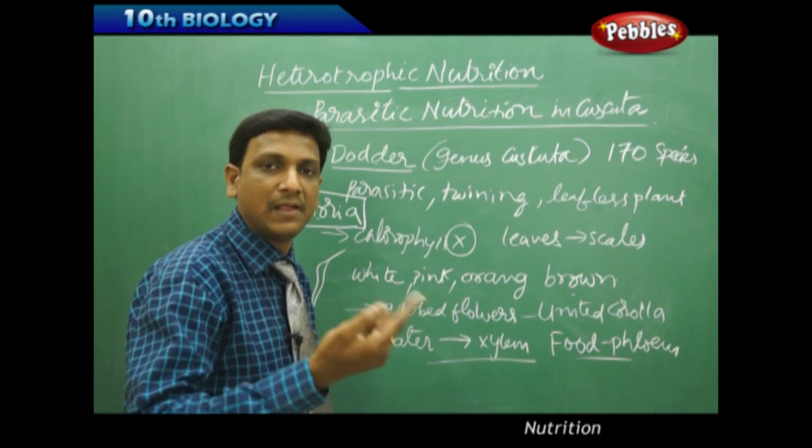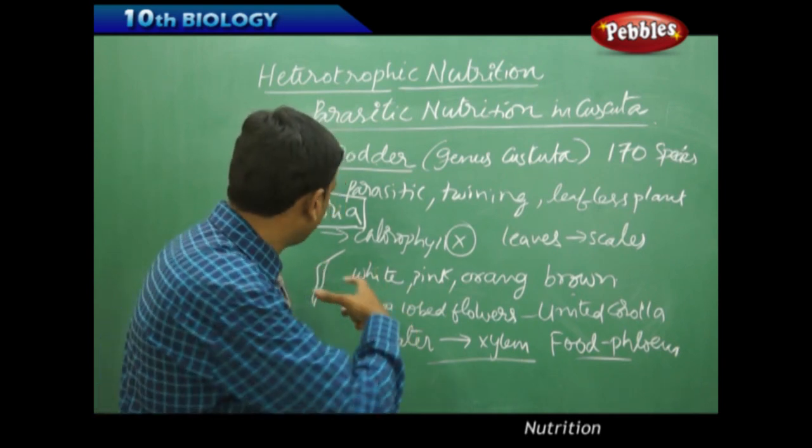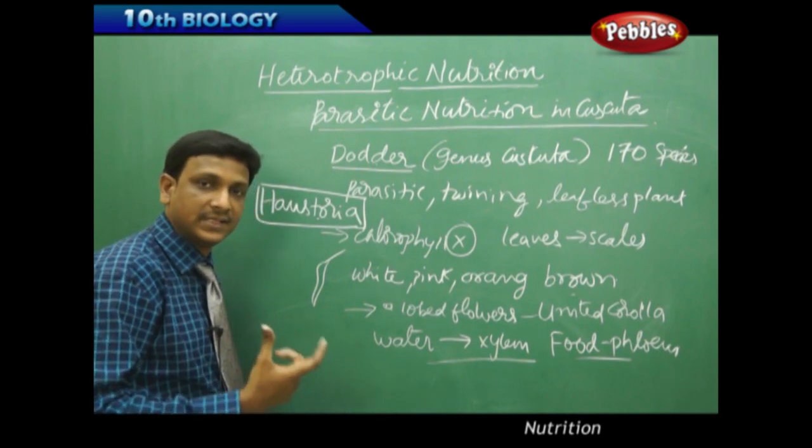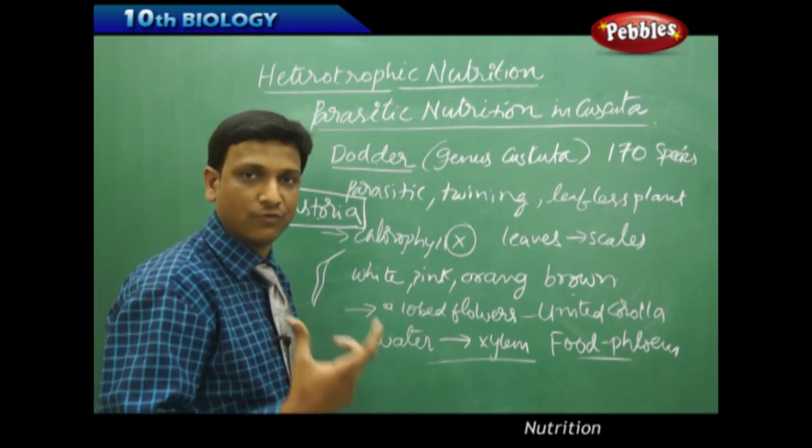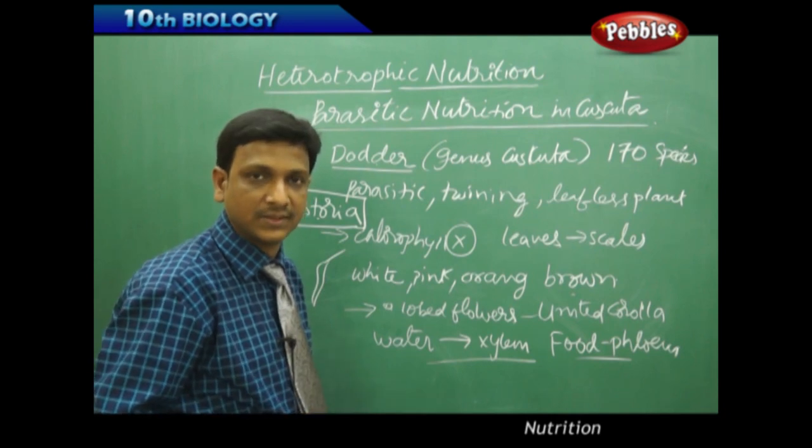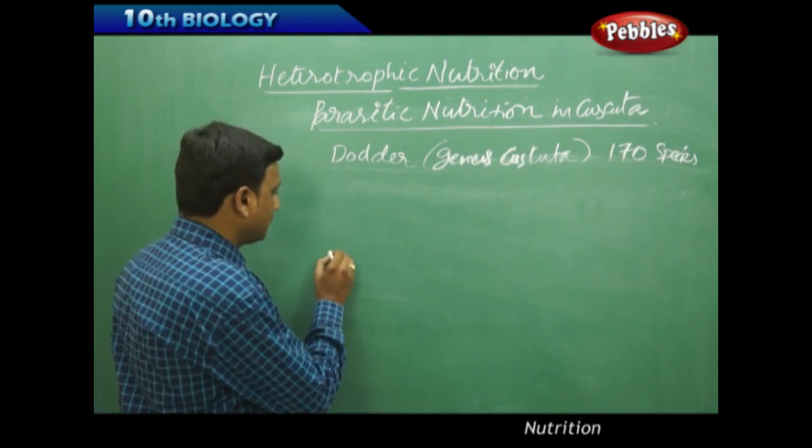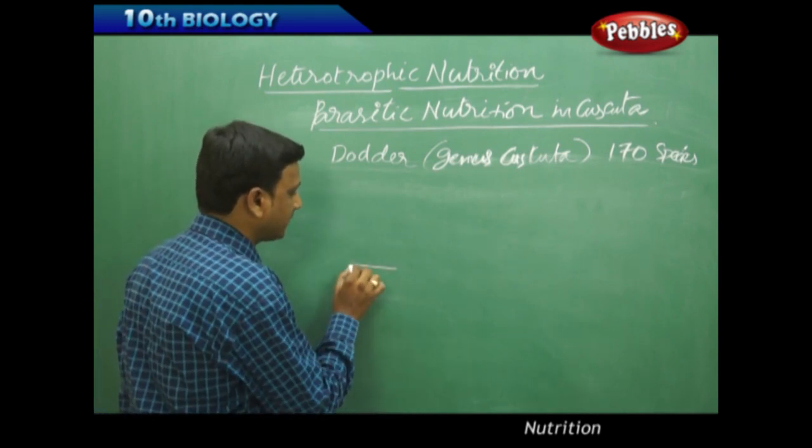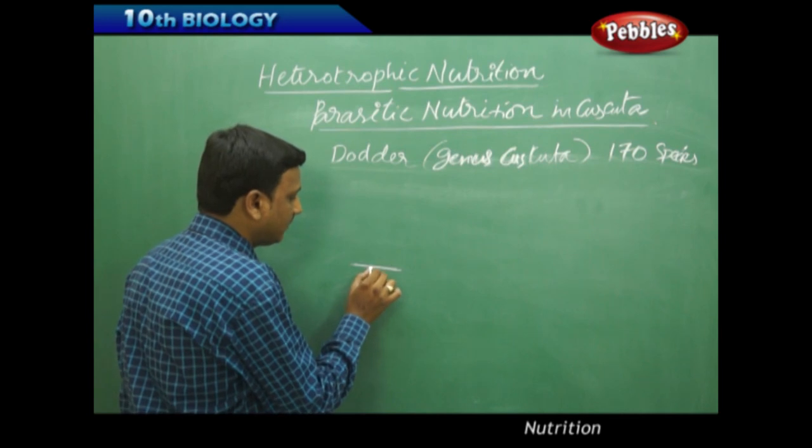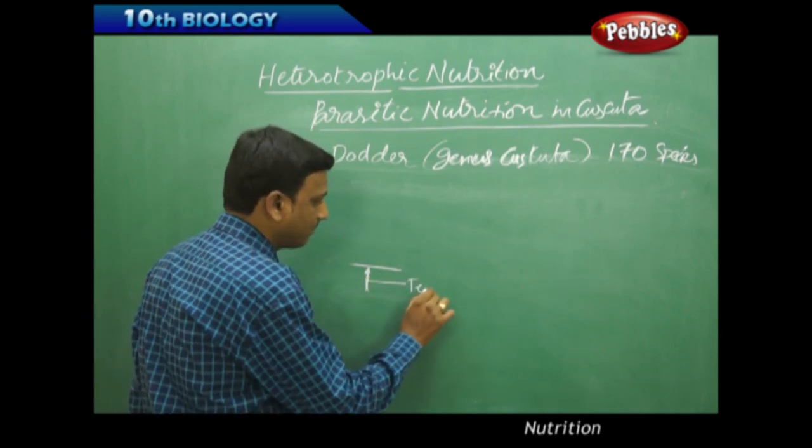Sometimes this haustoria may kill the host plant also. The dodder plant is getting its shelter, food - that is the nutrients and water - everything from the host plant. Now let us look at the life cycle of a dodder plant, how it propagates. When the seeds of the dodder plant germinate in the soil, it will have a temporary root.